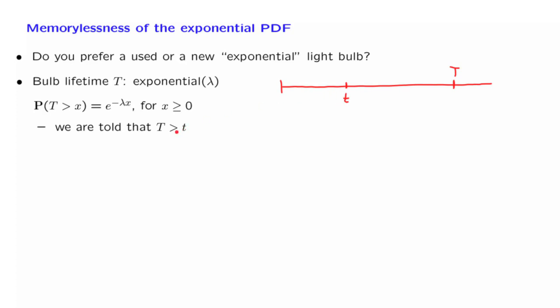So we know that the value of the random variable capital T is larger than little t. We are interested in how much longer the light bulb will be operating. And so we look at capital X, which is the remaining lifetime from the current time until the light bulb burns out. So capital X is this particular random variable here, and it is equal to capital T minus little t.